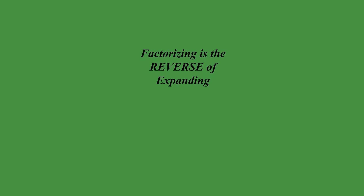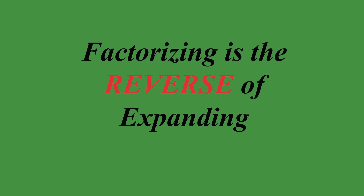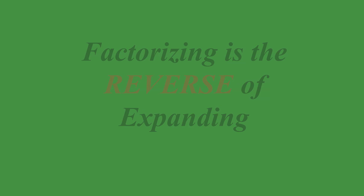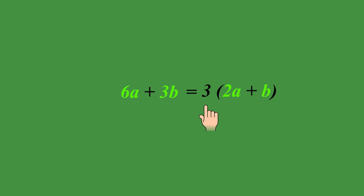Now we will learn to factorize expressions. Factorizing is the reverse of expanding. When we factorize, we start with an expression like 6A plus 3B and work out what multiplying number would go in front of the parentheses, and then what will be inside the parentheses.